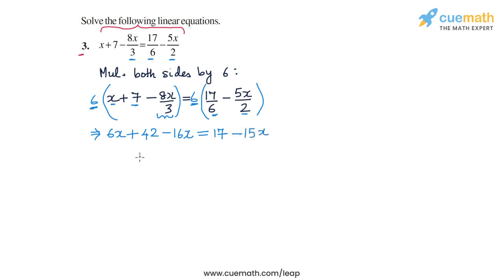We have basically converted all the coefficients into integers and now the calculations might be a little bit easier. So we have 6x minus 16x, that's minus 10x plus 42 on the left hand side, and on the right hand side we have 17 minus 15x.